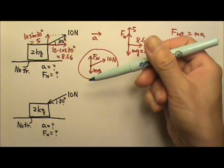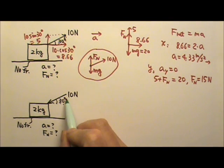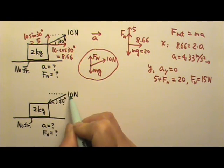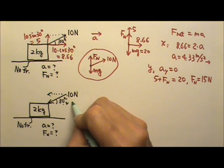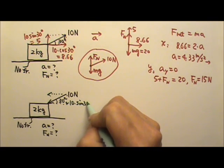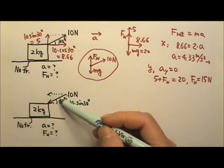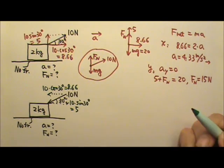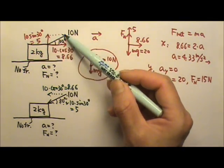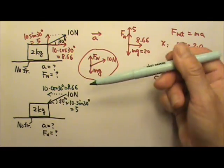Now what if the slanted force is a pushing force down like this? Again, we'll have to find the components. The downward component is opposite to the angle, so it is 10 times sine 30 degrees, which gives us 5, and the horizontal component is adjacent to the angle — so that's 10 times cosine 30 degrees, 8.66. Notice how the pulling force was to the right and upward, but this pushing force is to the left and downward, so the two components are down and to the left.